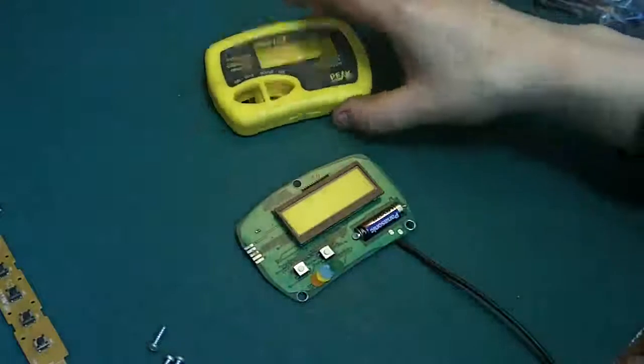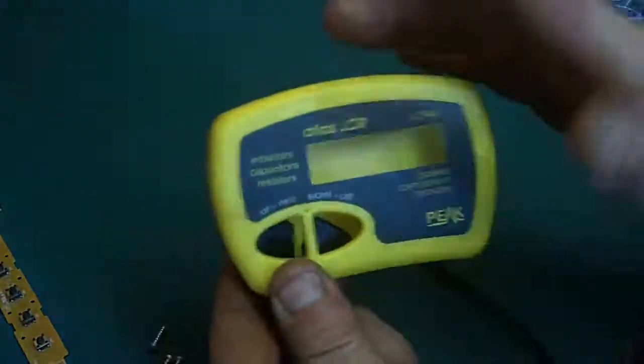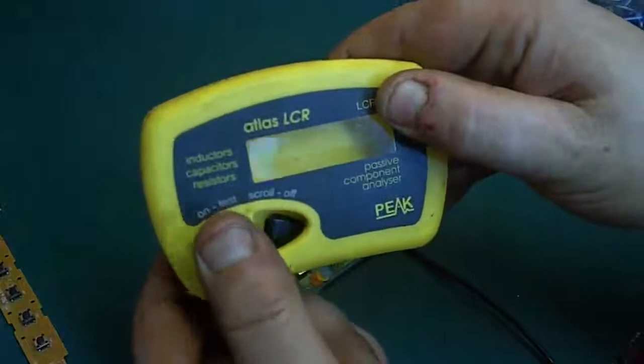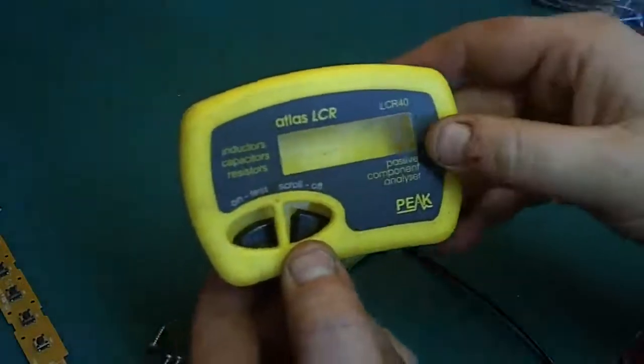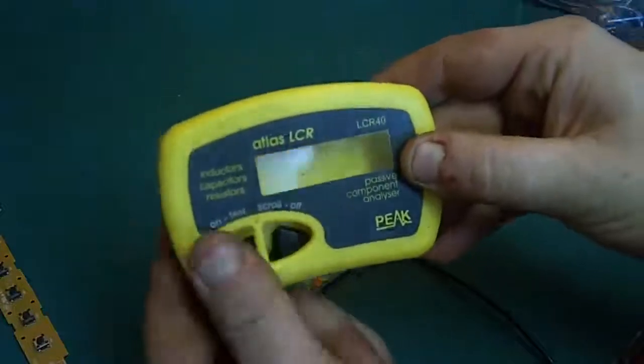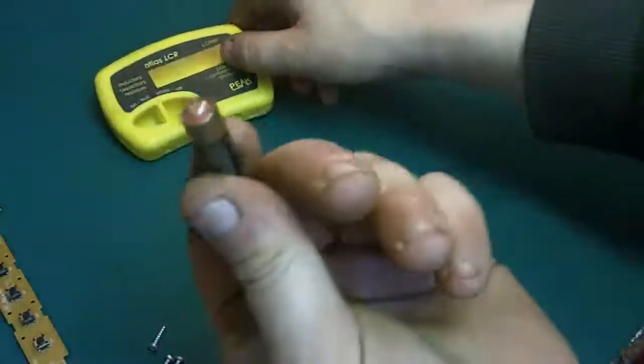And what happens with these meters is because there's no actual on-off switch, you just press the button like that to switch them on and off. In your pocket and in your tool bag and things like that, the button gets pressed every now and again, and eventually it just wears the battery down.